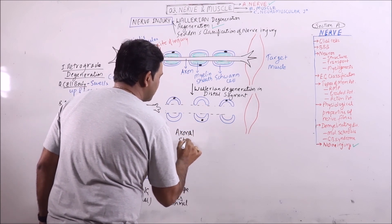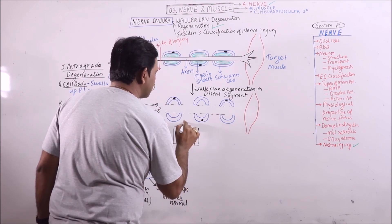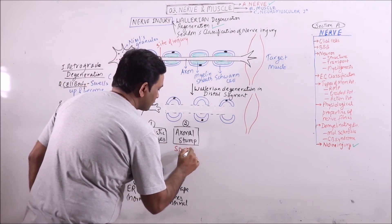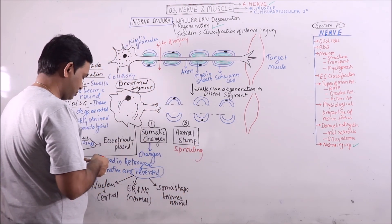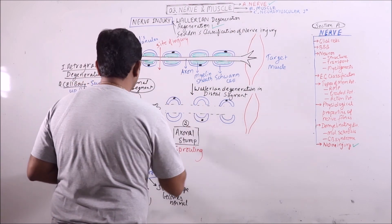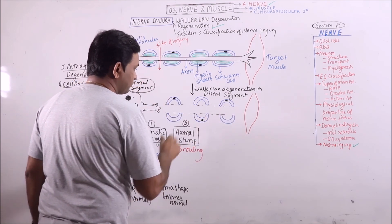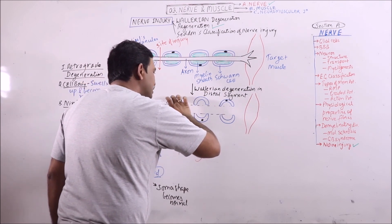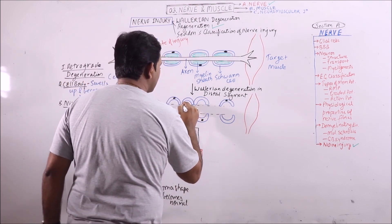Axonal stump shows sprouting. So few branches may sprout off the axonal stump. Then the Schwann cells which have survived may divide or may not divide, but important thing is that Schwann cells align themselves in a row.